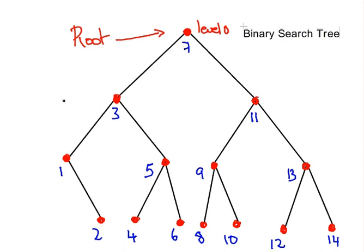These two vertices, or nodes, are at level one. And these are level two. And these are at level three. These nodes are at level three.